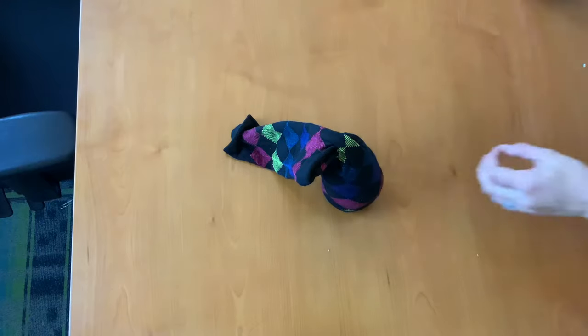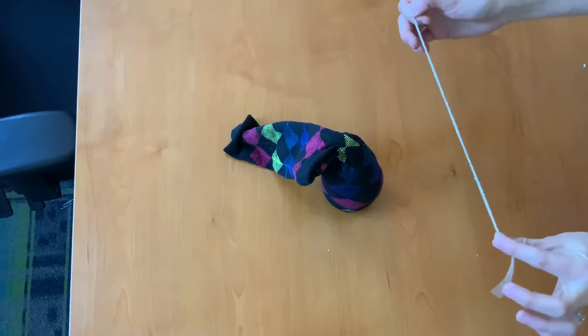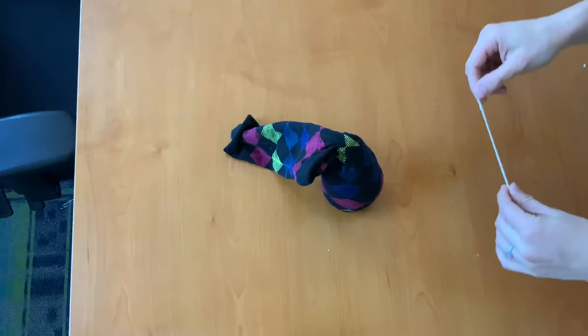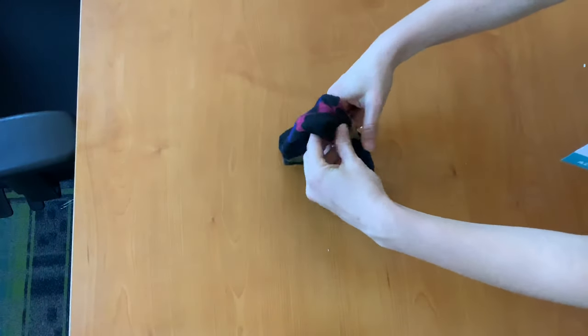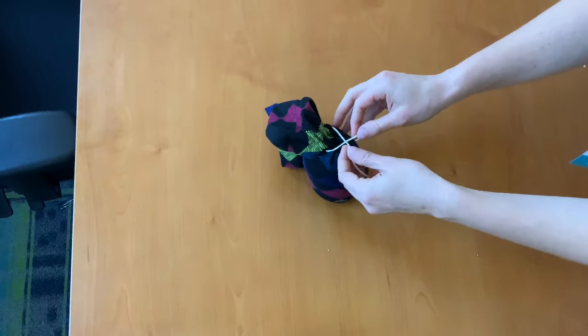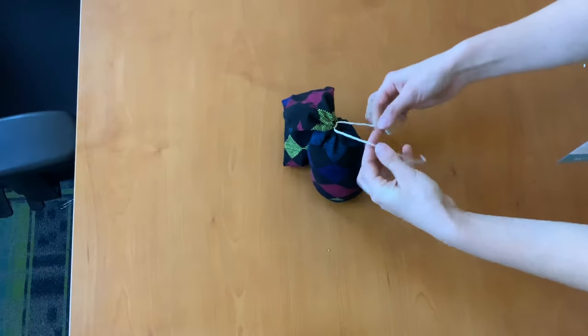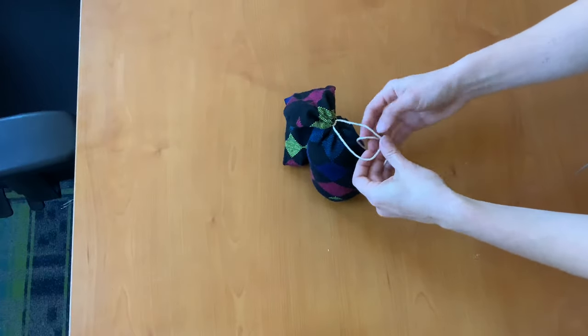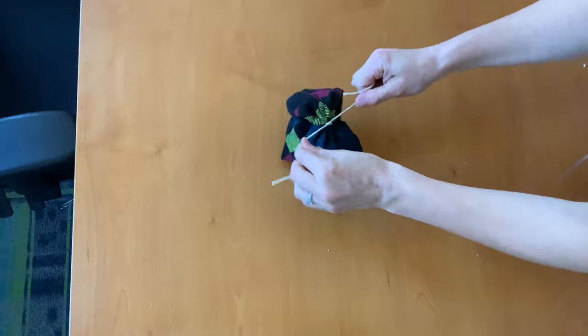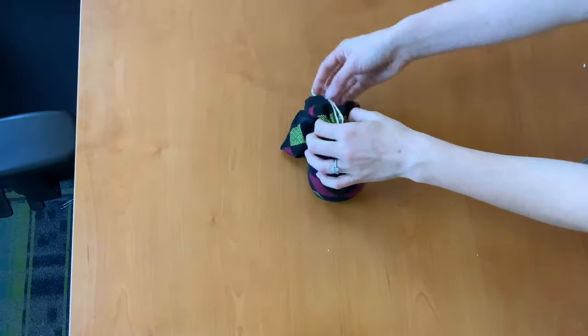Next step, we are going to take a piece of twine. I said a rubber band in the instructions, so if you have a rubber band, you're more than welcome to use that. But I'm going to use some twine and I'm just going to wrap it around the sock right above the polyfill and we're going to tie it off and we can do a double knot because this part's not going to show.